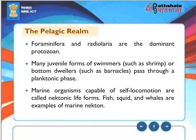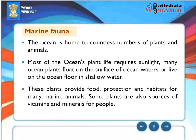Marine Fauna: The ocean is home to countless numbers of plants and animals. Most of the ocean's plant life requires sunlight, and many ocean plants float on the surface or live on the ocean floor in shallow water, providing food, protection, and habitat for marine animals. Some plants are also sources of vitamins and minerals for people. Marine organisms capable of self-locomotion — nekton — include fish, squid, and whales, and many juvenile forms of swimmers or bottom-dwellers pass through a planktonic phase.